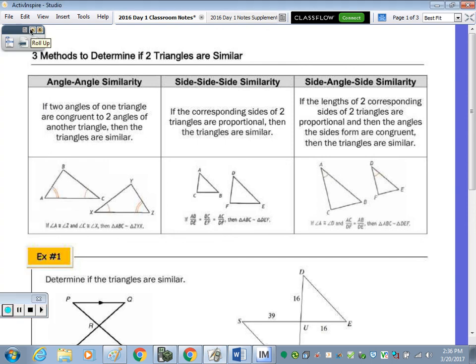The three methods to determine if two triangles are similar: angle-angle similarity, side-angle-side similarity, and side-side-side.